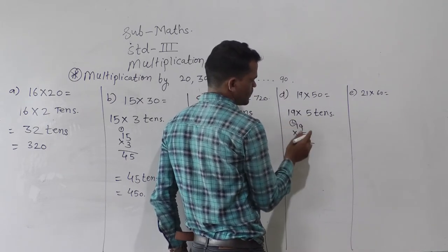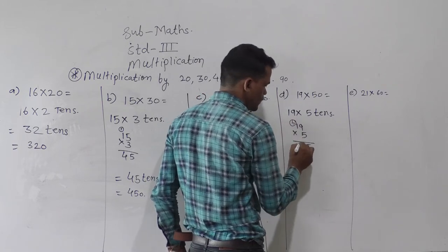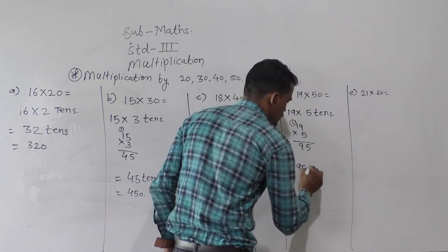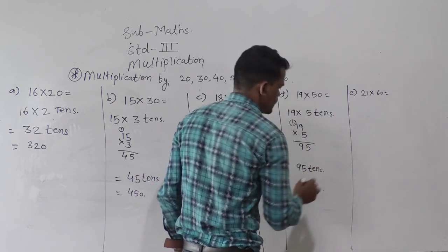Then 5 ones are 5, 5 plus 4, 9. So here 95 tens is the answer.